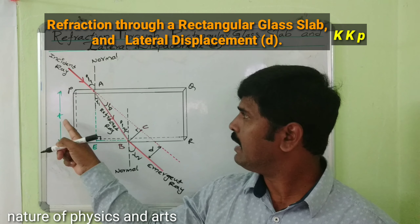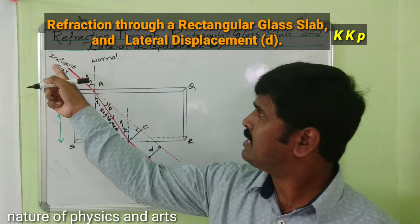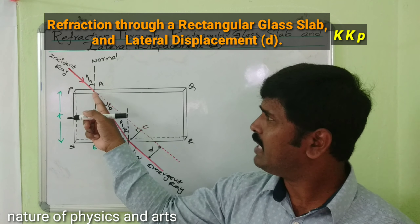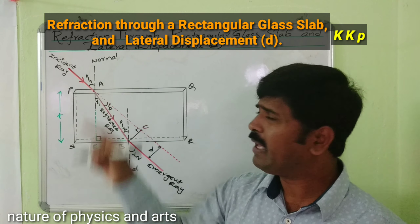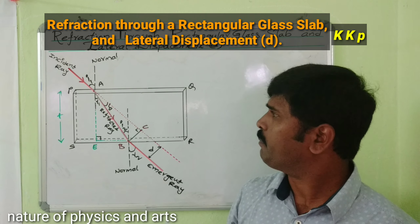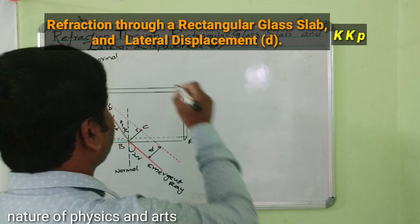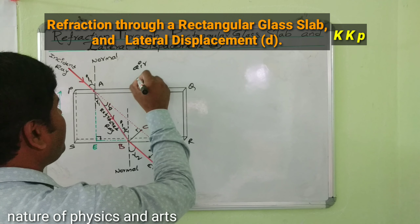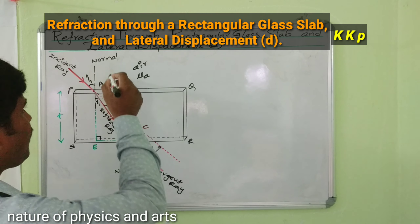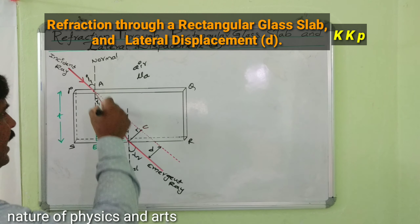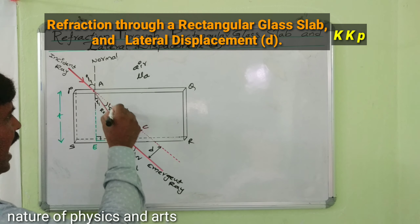Considering a rectangular glass slab PQST, where T is the thickness of the rectangular glass slab. This is the incident ray which is incident at point A. This is the normal, and the incident ray makes an angle i1. When light travels from a rarer medium to a denser medium — air is the rarer medium with refractive index mu_A.